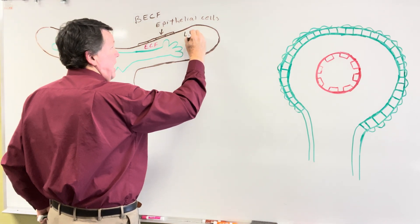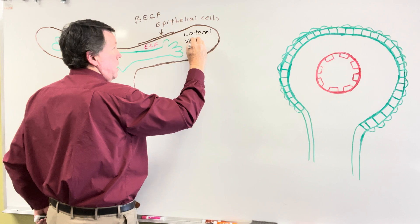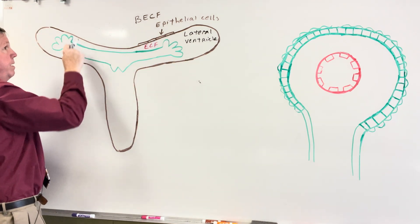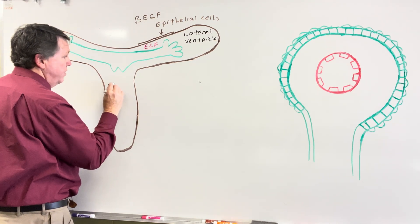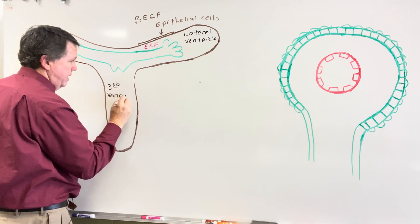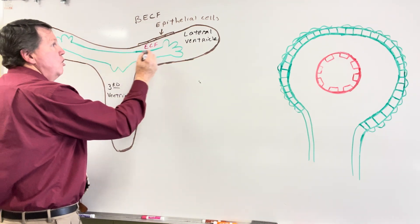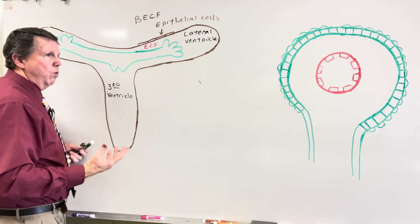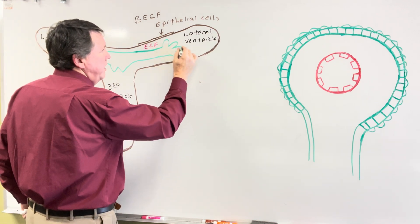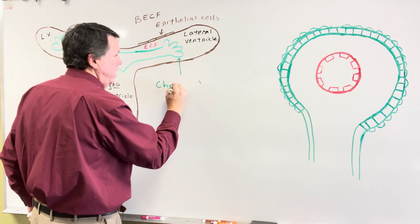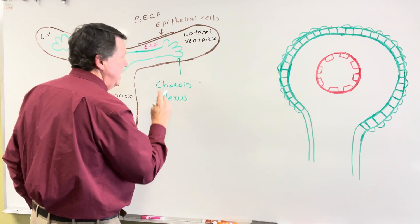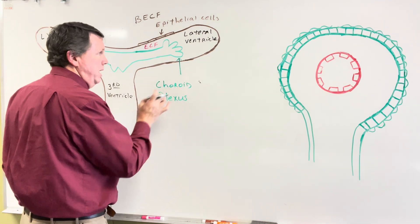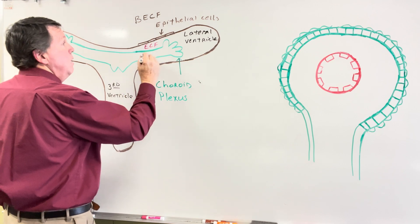So this is looking at the ventricle — this is going to be my lateral ventricle. All outside of this green is going to be my extracellular fluid. Down in here I'm going to have my third ventricle. We have this green line, and these are going to be specialized ependymal cells or choroid epithelial cells. These finger-like projections are called the choroid plexus, made up of specialized choroid epithelial cells which are a modified form of ependymal cells.